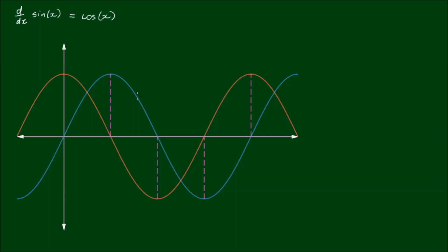On the turquoise curve here we have the function sine of x, and the orange curve is the cosine of x. In earlier mathematics you may have noted that the slope at this local maximum of the sine curve — so this tangent line to the curve — has a slope of zero.